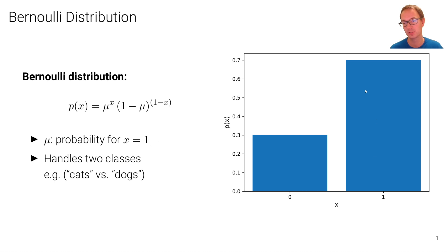We can also write this graphically as a histogram, where we have the probability for class 0 and then the probability for class 1. Which in the case of binary random variables must be 1 minus the probability of class 0, because both of them must sum to 1.